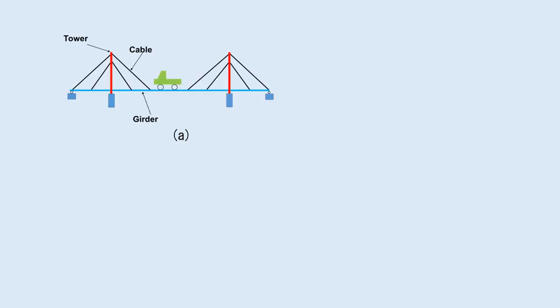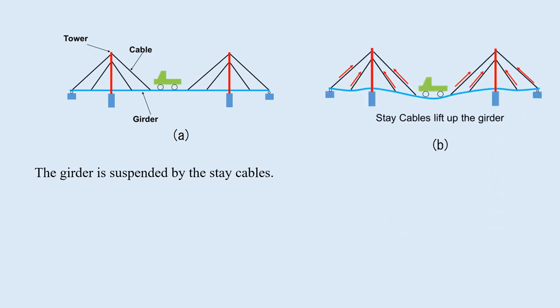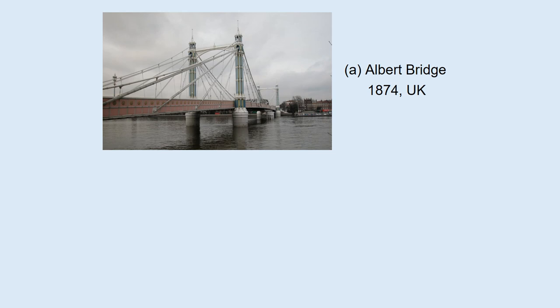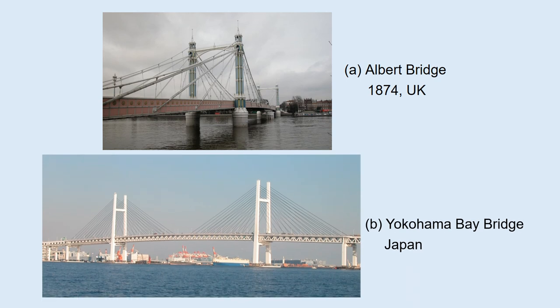A cable-stayed bridge consists of a girder, cables, and a tower. The girder is suspended by the stay cables. When the girder is loaded, the stay cables lift it up. Therefore, the stay cable is subjected to tension, the girder to axial compression and bending moment, and the tower to axial compression and bending moment. The Albert Bridge is the first cable-stayed bridge in the world, built in 1874 in the UK — it has a combined form of cable-stayed and suspension bridge. The Yokohama Bay Bridge is a typical modern cable-stayed bridge.